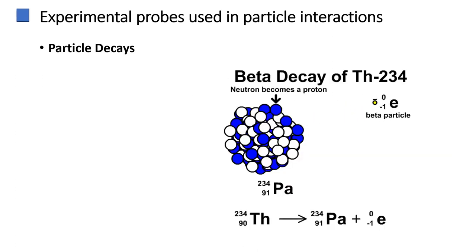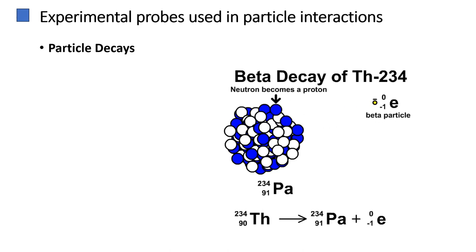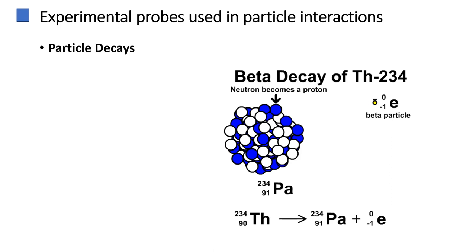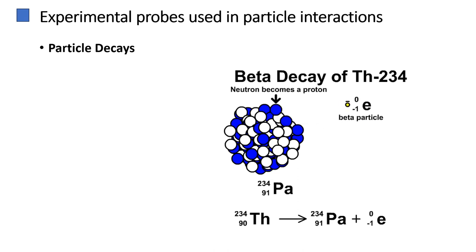Particles decay over time into other particles, and studying these decay processes provides crucial information about the properties of the decaying particle. Particle detectors capture and analyze these decays to understand the rules that govern how particles transform into other particles. For instance, the study of particle decays has led to the discovery and understanding of particles like the W and Z bosons, as well as the Higgs boson. Decays also contribute to verifying the predictions of theoretical models in particle physics.